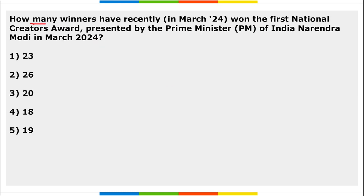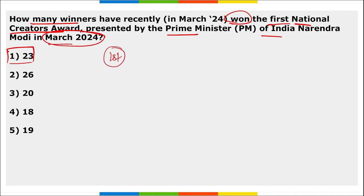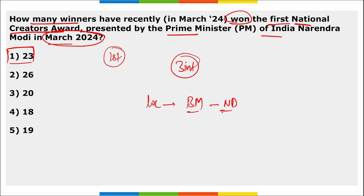Next: how many winners have recently won the first National Creators Award presented by Prime Minister Narendra Modi in March? A total of 23 creators were awarded with the National Creators Award — the inaugural edition. There were 23 winners, of which three were international winners and 20 were across 20 categories. The event was held at Bharat Mandapam in New Delhi.